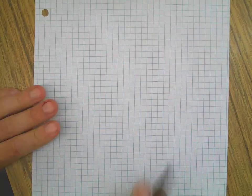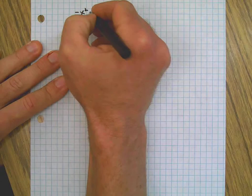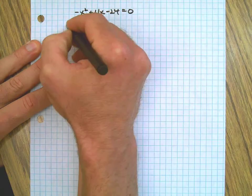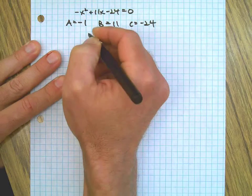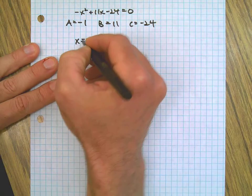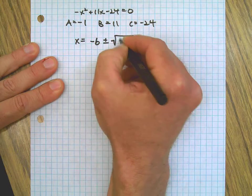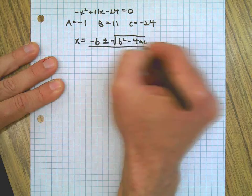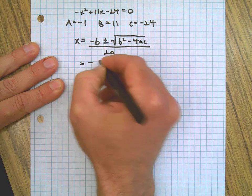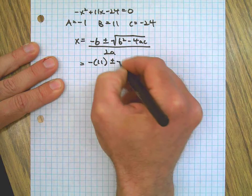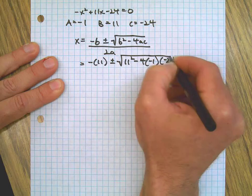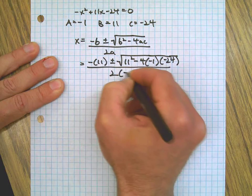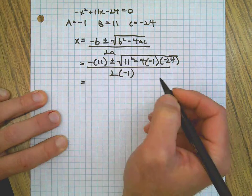So we have our equation. We know what a, b, and c are. And here we go with the quadratic formula: x equals negative b plus or minus the square root of b squared minus 4ac, all over 2a. Substitute: negative 11 plus or minus - there's that 11 again - minus 4 times negative 1 times negative 24, all over 2 times a, which is negative 1. Being very careful with our substitutions here.